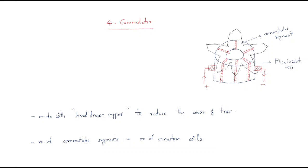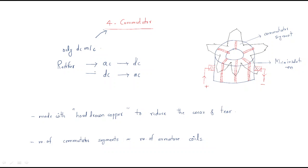Next is the commutator, which is very important in DC machines — the remaining machines do not have a commutator; it is found only in DC machines. The commutator converts AC to DC, in which case it acts as a rectifier, and converts DC to AC, in which case it works as an inverter. These are the main functions of the commutator.